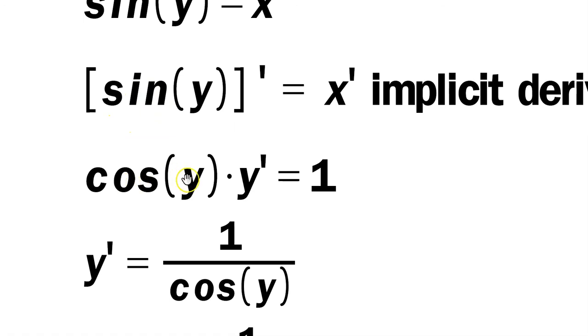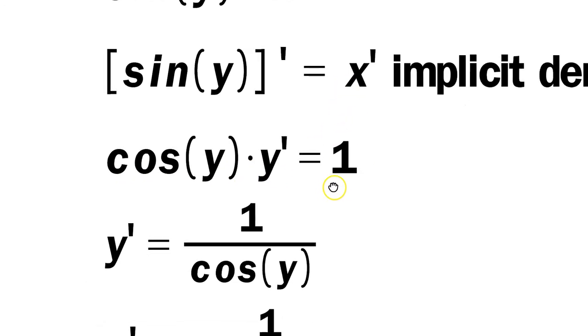So you'll have cosine of y times y prime, so derivative of the outside, copy the inside, multiply by the derivative of the inside. x prime, when you differentiate that, that's equal to 1.